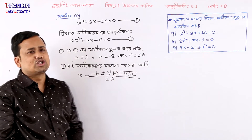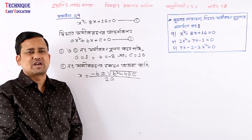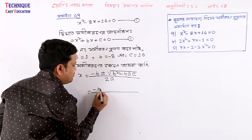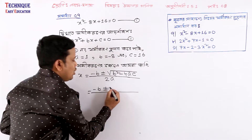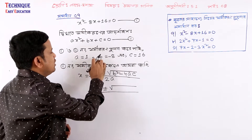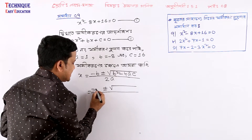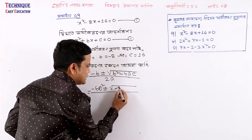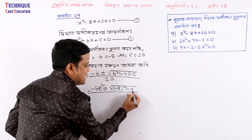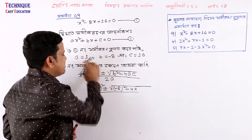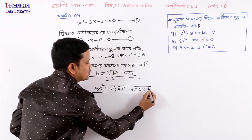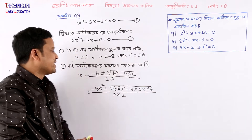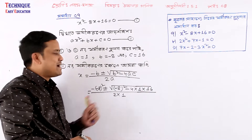We know that x is equal to minus b plus minus root b squared minus 4ac, all divided by 2a. So, b value is equal to minus 8. So minus b means minus of minus 8. So, minus b is equal to plus 8. And a is equal to 1, and c is equal to 6.